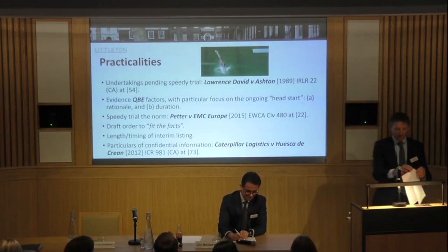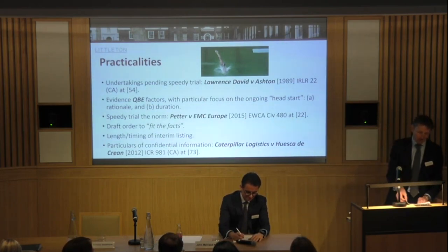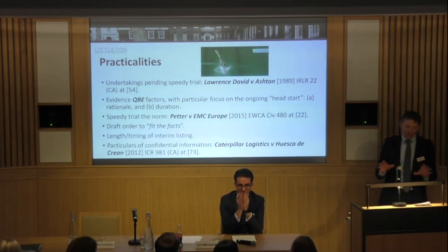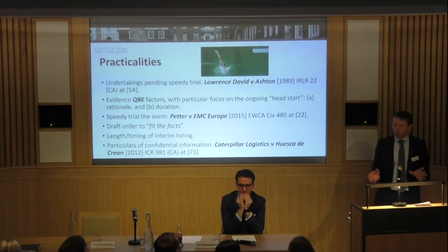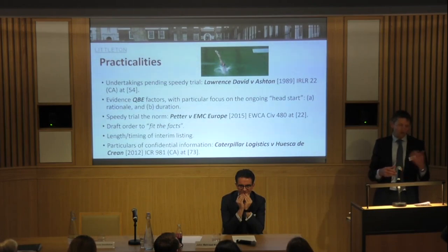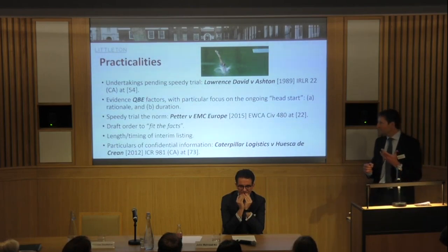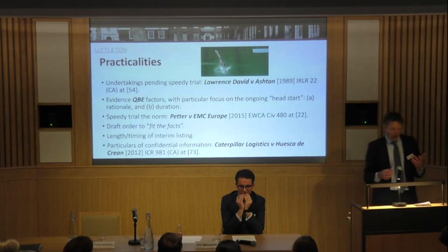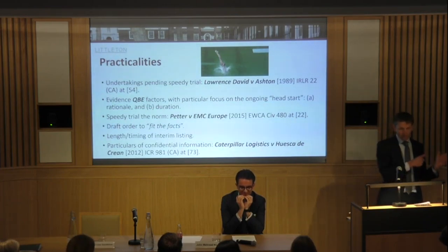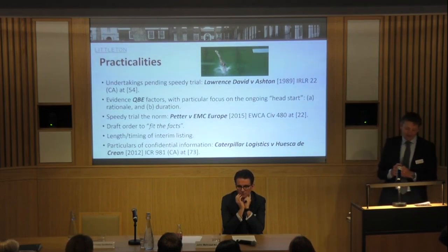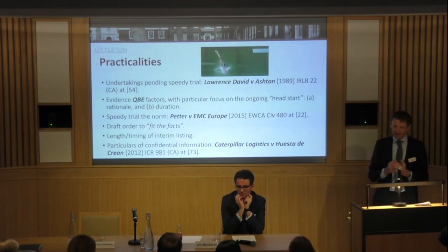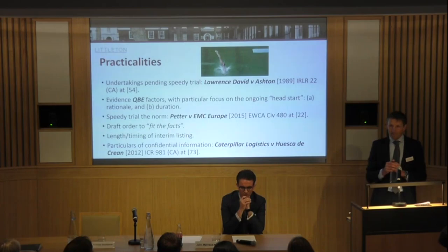So you've sought undertakings and they've been refused, and you're quickly bounced into having to seek your springboard injunction from the court. This moves on to my second question: how do you get one? There's a pressing need for a forensic deep dive into the evidence, and this applies irrespective of which side of the case you're acting on. You really need to be kicking the tires of the case.